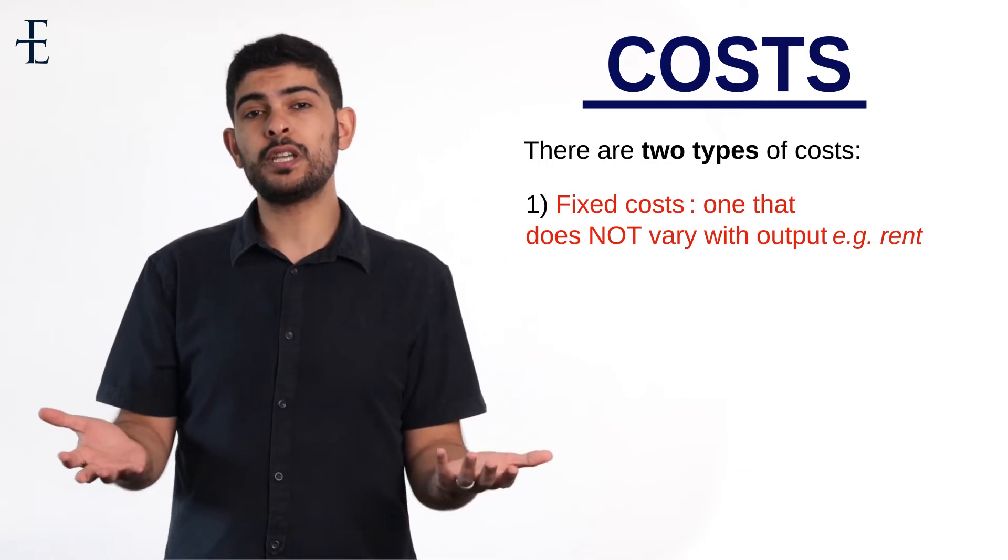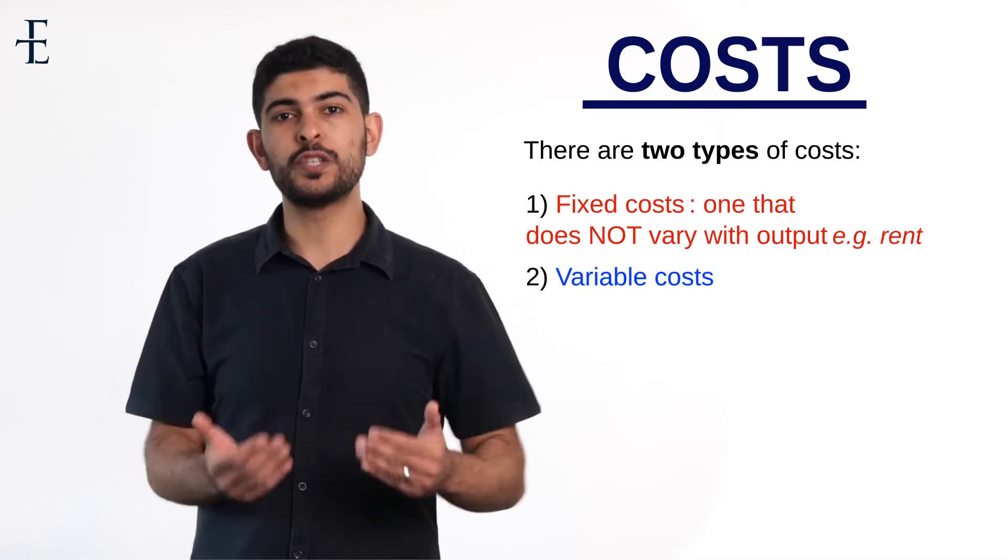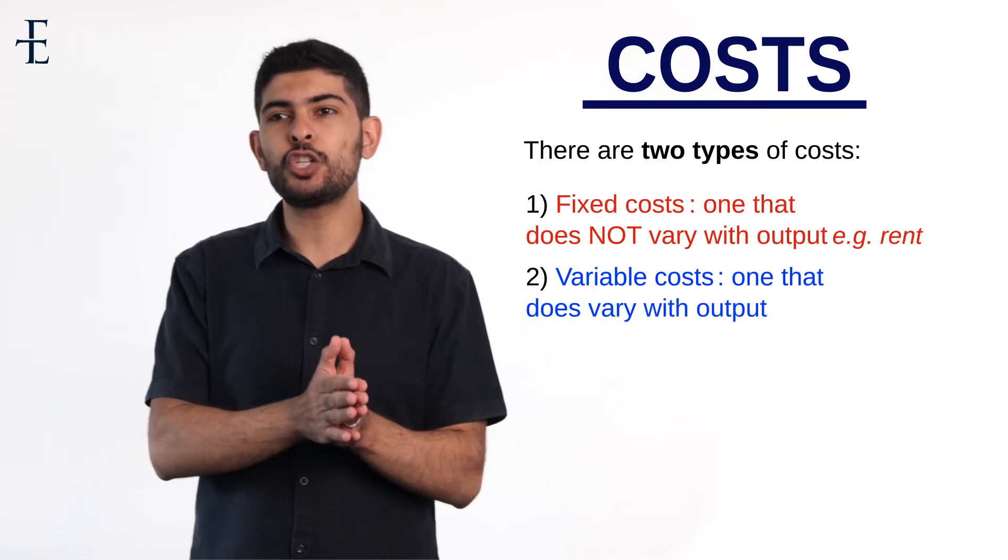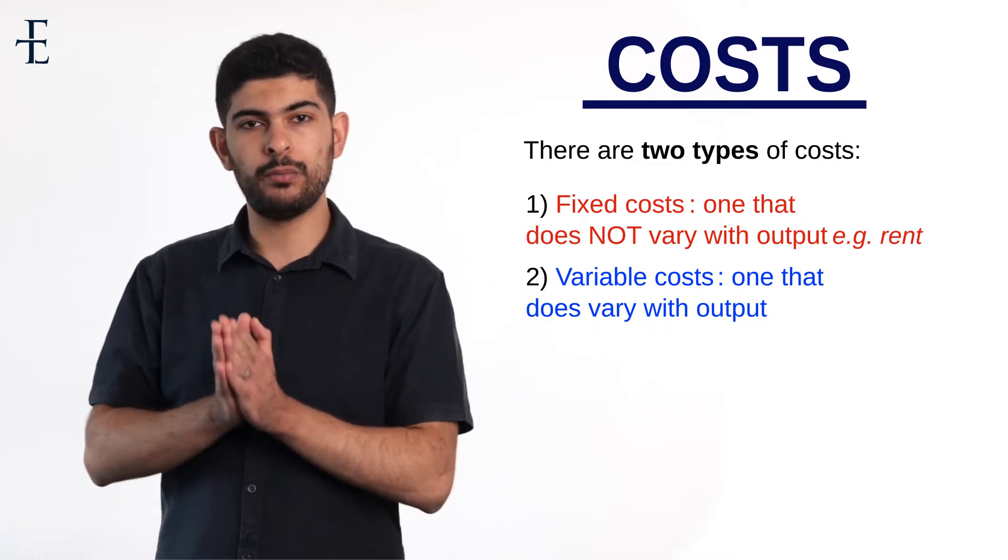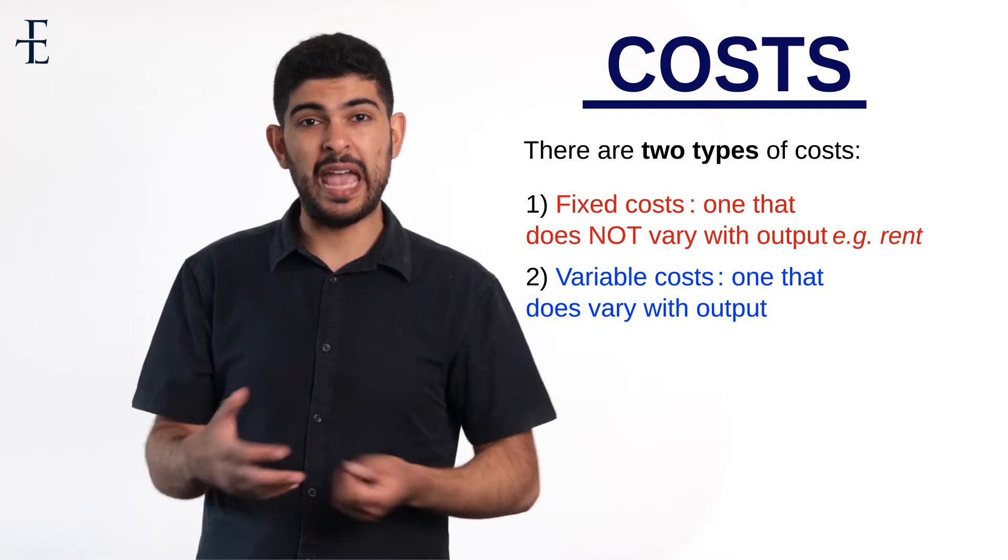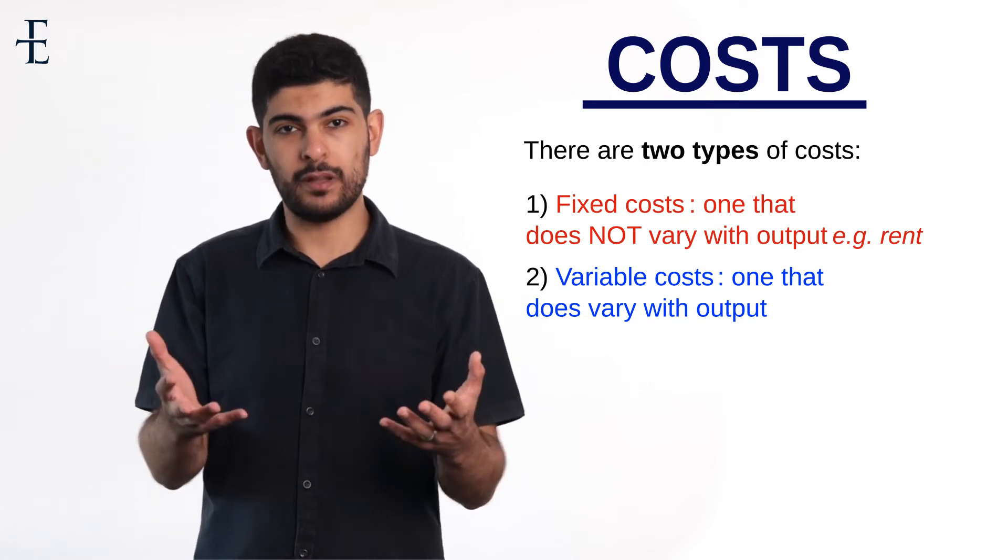The second type of cost is known as a variable cost. A variable cost is where the costs vary with output from the name. In the context of my chocolate factory, what would be an example of a variable cost? An example would be anything that I need to produce the chocolate with. For example, cocoa, sugar, milk.